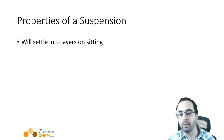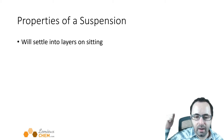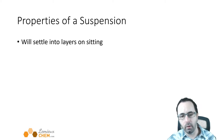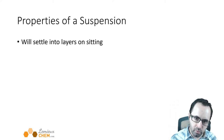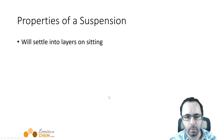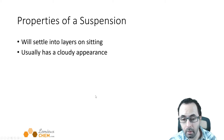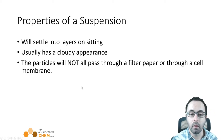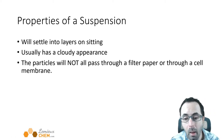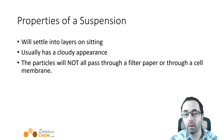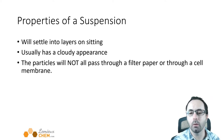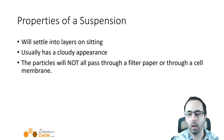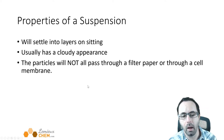An example of a suspension would be Italian salad dressing. You can shake it up and put it on your salad, but if you leave it on the table for a few minutes, the oil and water will start to separate and settle into layers because that oil and vinegar Italian dressing is a suspension, not a colloid. It will still have a cloudy appearance like a colloid, but the difference is that it will settle into layers. Another difference is how you separate them — in a suspension, the particles will not pass through filter paper, so you can separate them using filter paper, unlike a colloid whose components would pass through.